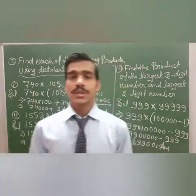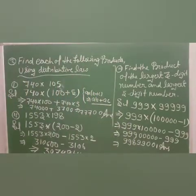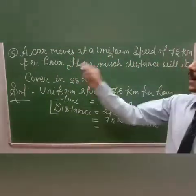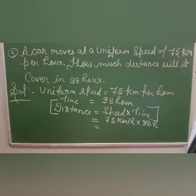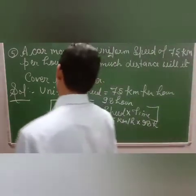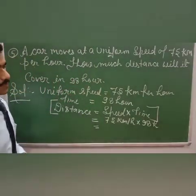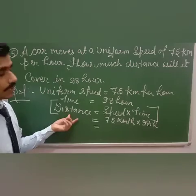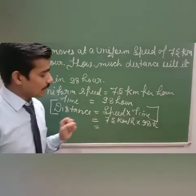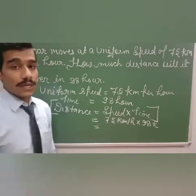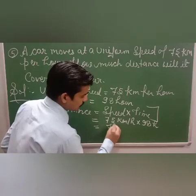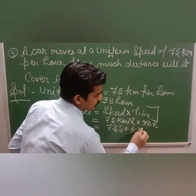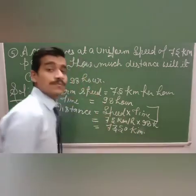Question number 5: A car moves at a uniform speed of 75 km per hour. How much distance will it cover in 98 hours? Using the formula: distance is equal to speed into time. Speed is 75 km per hour and time is 98 hours. Multiplying both numbers, the answer is 7,350 km. Thank you students.